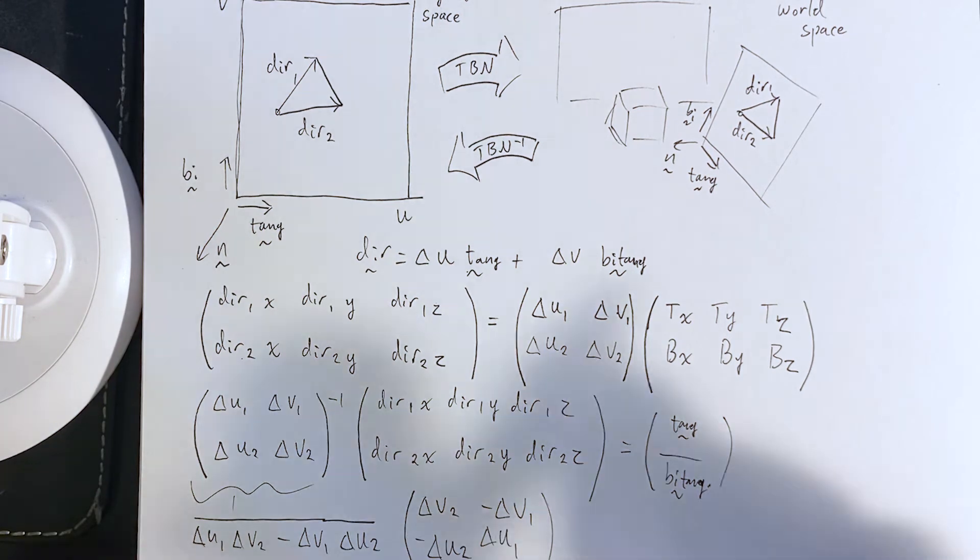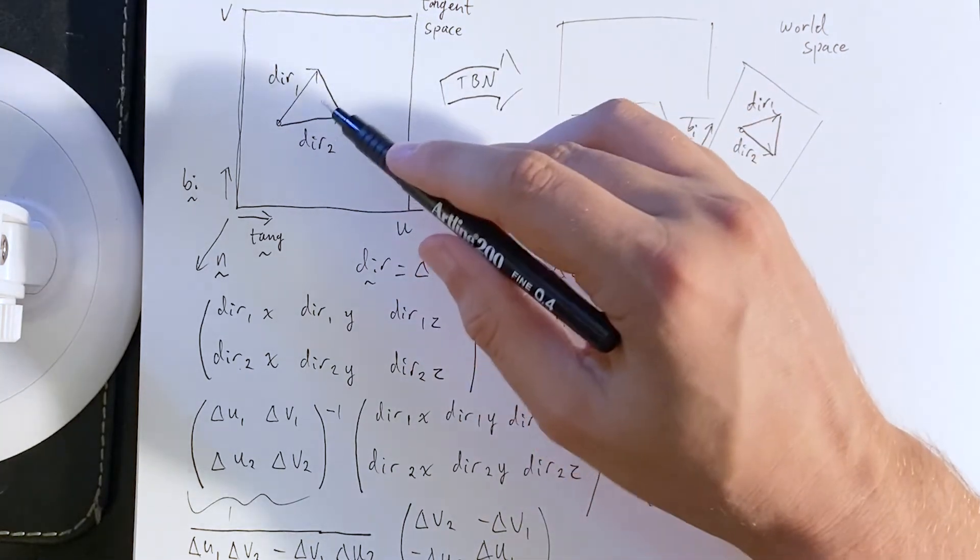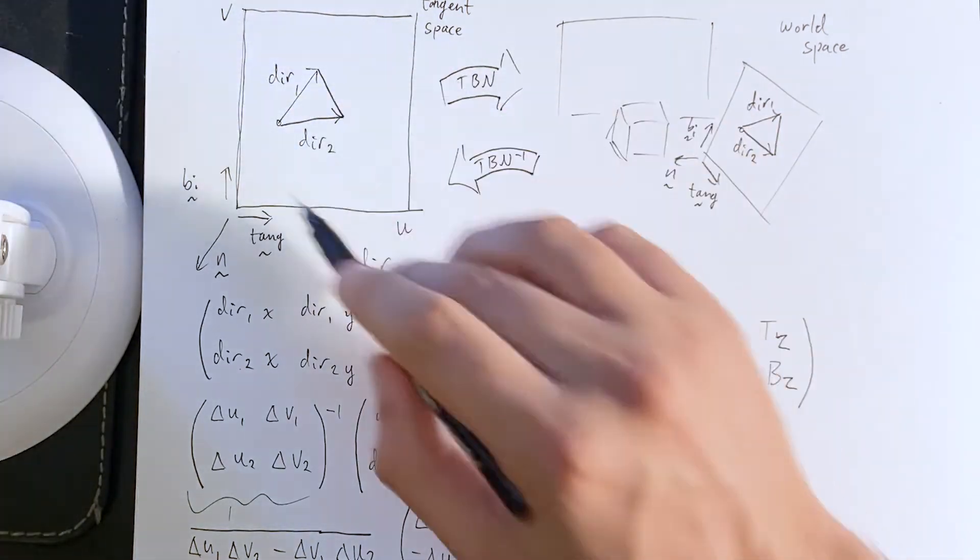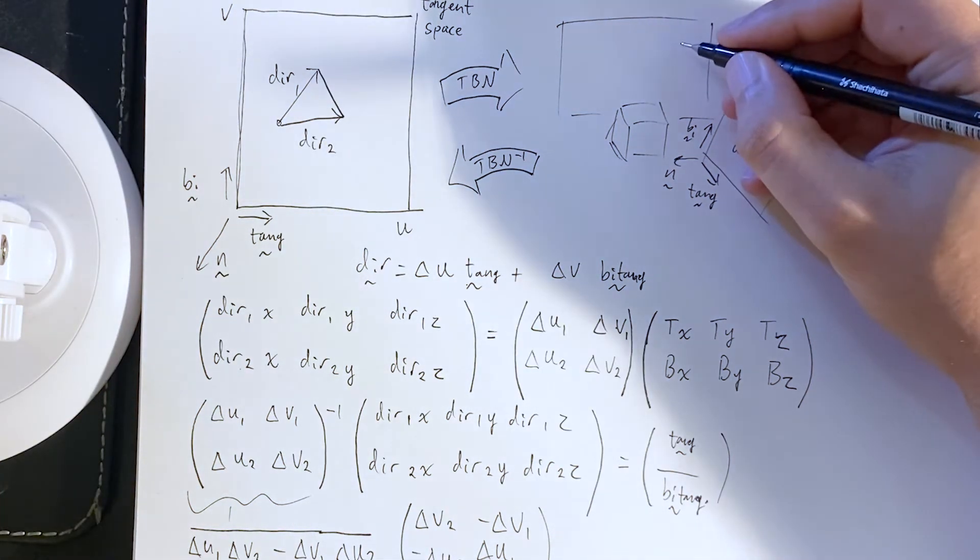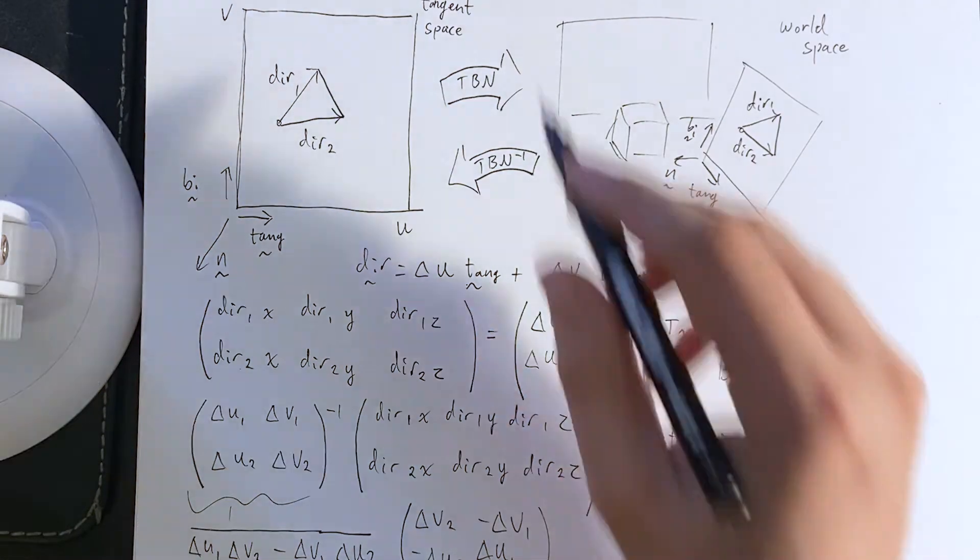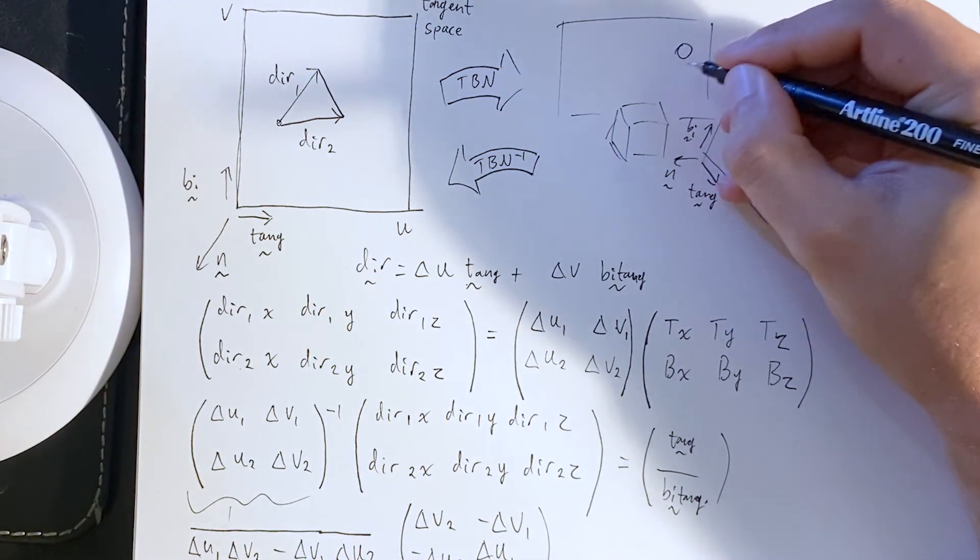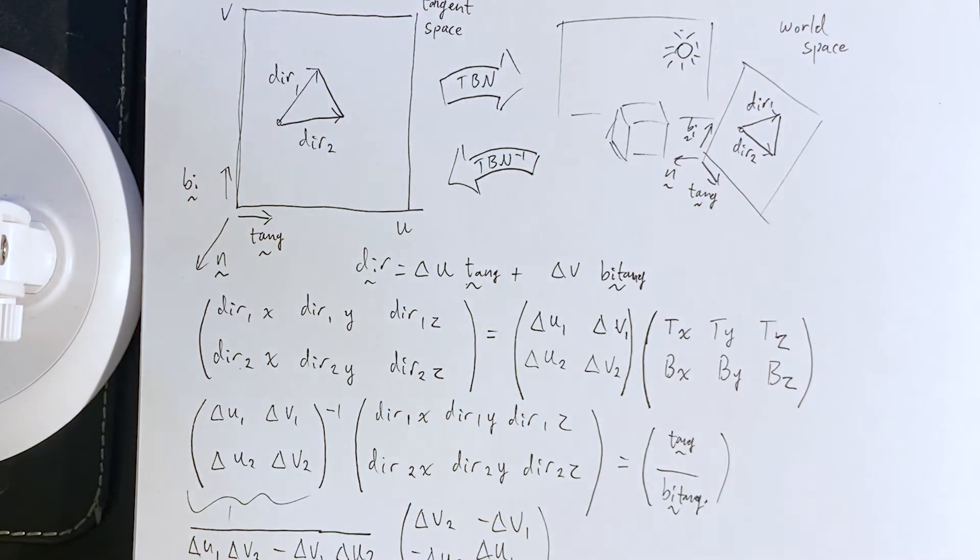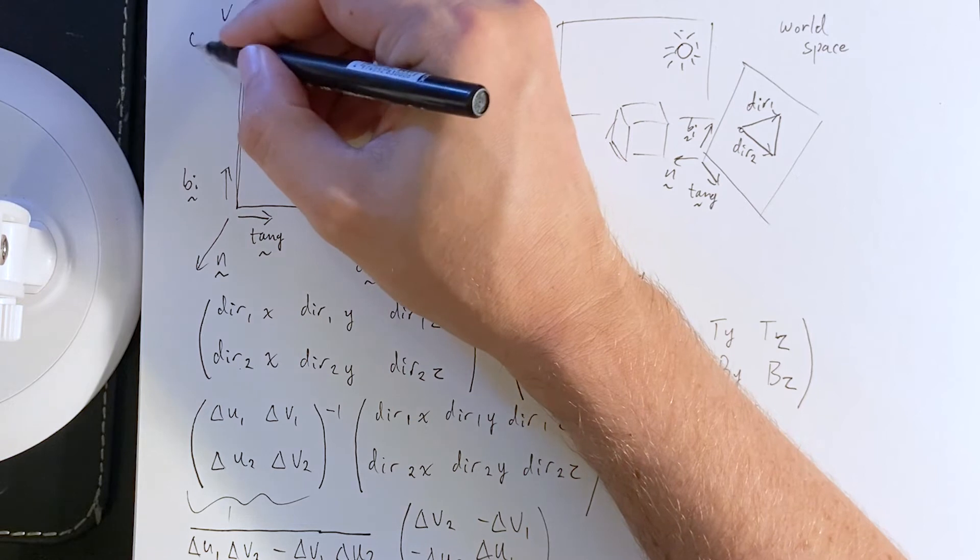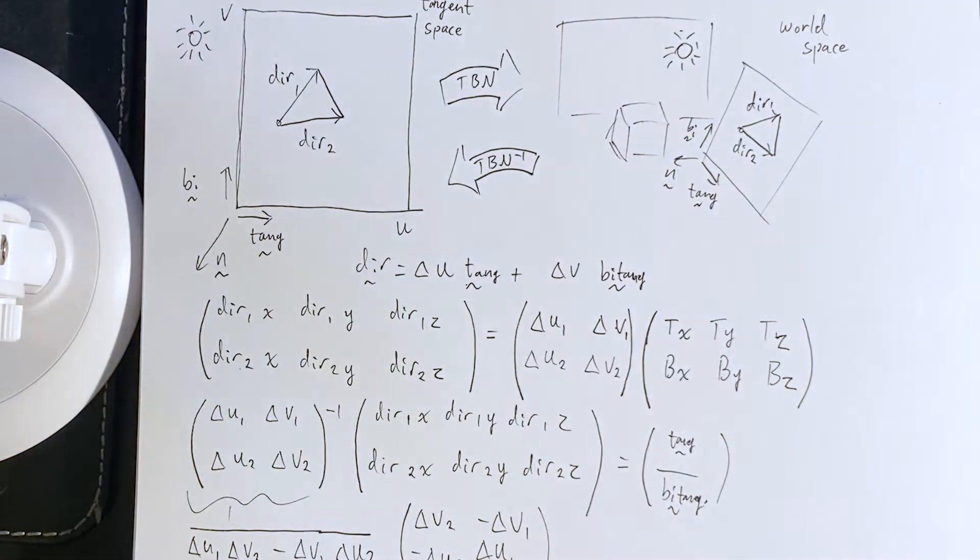Now, why do we need the tangent and bitangent? It's kind of not necessary to go from tangent space into world space, kind of done for us already. But could be useful if we have some lights out here in world space to convert those lights back to tangent space and calculate lighting that way. Might be useful.